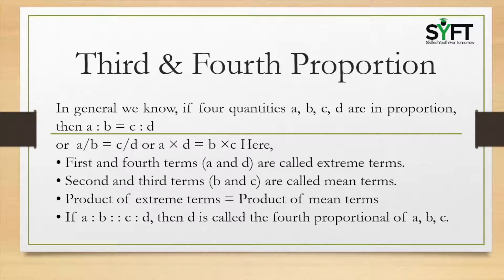In general, if four quantities a, b, c, d are in proportion, then a is to b equal to c is to d, or a by b equal to c by d, or a into d is equal to b into c. Here, the first and fourth terms a and d are called extreme terms, and the second and third terms b and c are called mean terms. The product of extreme terms is equal to the product of mean terms.